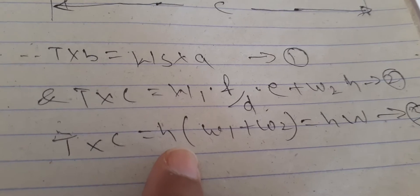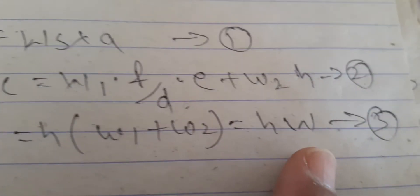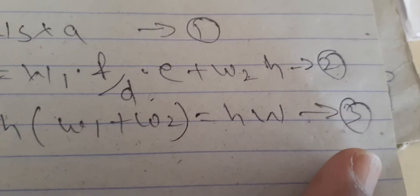And third, we get T into c equals h into W1 plus W2 equals h W. That is third equation.